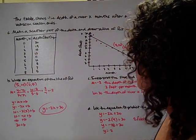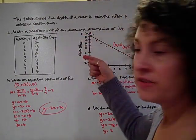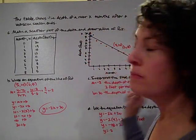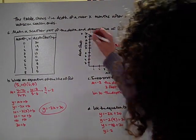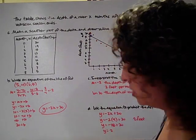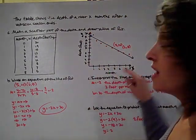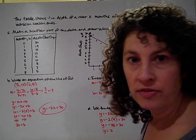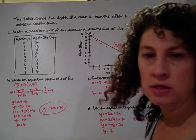You may want to take a second and pause the video while you plot those data points. So you're going to plot the data points. We've got our depth in feet on our Y axis. We've got the month on our X axis. So we've got our X as month and our Y as our depth in feet. I've plotted my points on here.